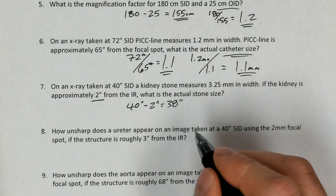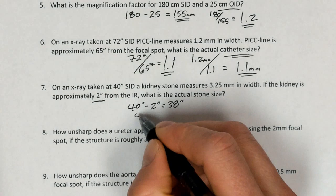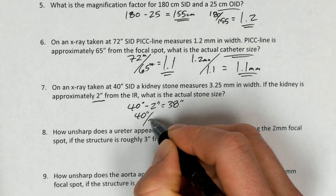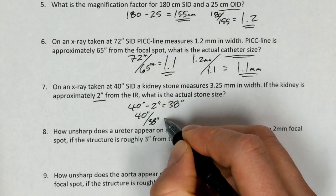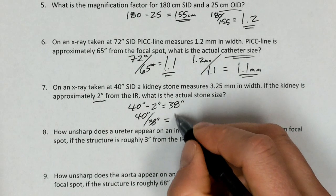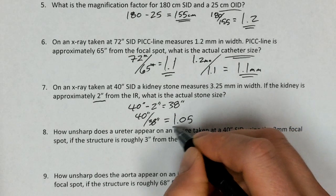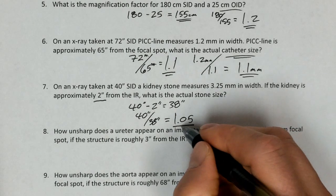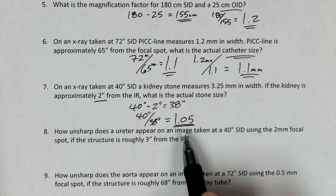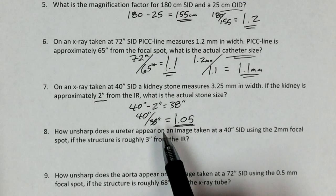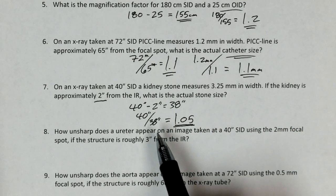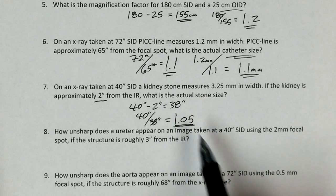And so again, we set this up, SID over SOD, 40 inches over 38 inches. It will give us our magnification factor of 1.05. So that's the first step. Now we need to plug that magnification factor in to figure out what is the actual stone size.